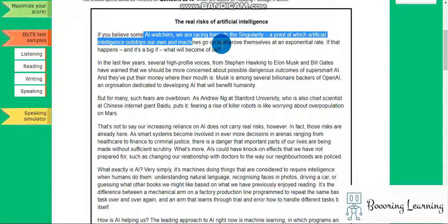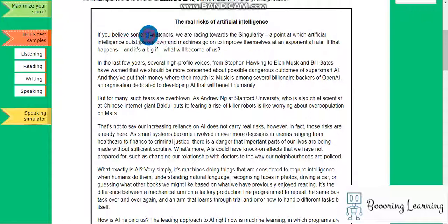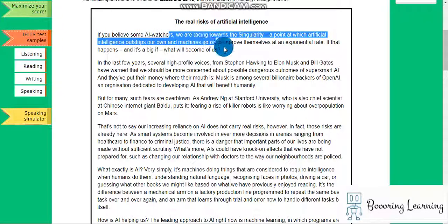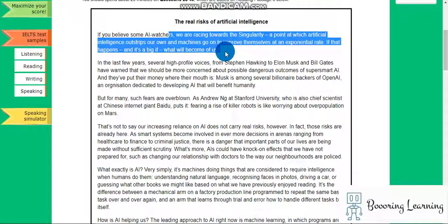So it is artificial intelligence. Watchers, we're facing towards the singularity. Artificial intelligence outstrips our own and machines going to improve themselves at an exponential rate. Okay.